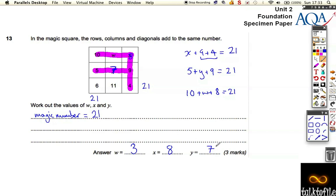Okay, so we're going to add up and make sure that all the numbers add up to 21 with the magic square. This one was actually quite an easy 3 marks.